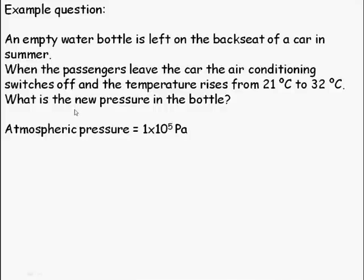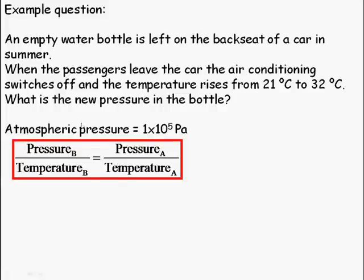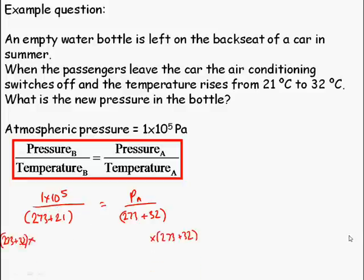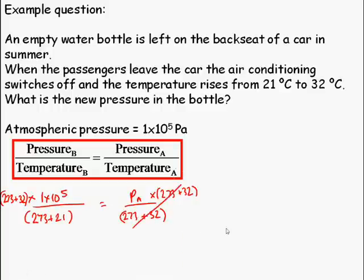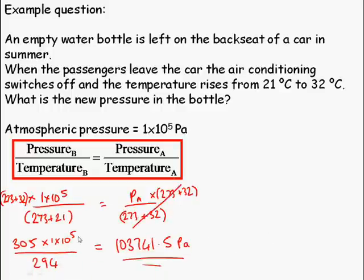For example, pause the video and read this question. I can use this formula to answer this problem. If I put in the pressures and the temperatures before—note that I have to put the temperature in Kelvin—I can rearrange the formula, multiplying both sides by 273 plus 32, cancel out, and get the new pressure. So I was able to calculate the pressure when it wasn't known.